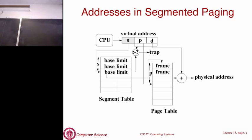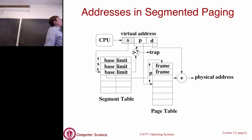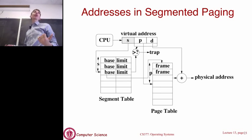We have a segment table for each process with one entry per segment, and what the segment table directs us to is the page table for that segment. If a virtual address says segment 3, that gives the base address of segment 3's page table. Then we do standard paging: use the page number to index into that page table and offset into the frame. So it's standard paging combined with segmentation: the segment table points to multiple page tables, one per segment.